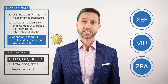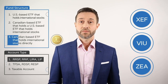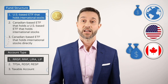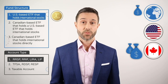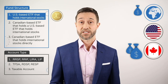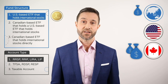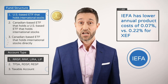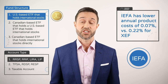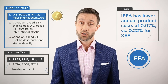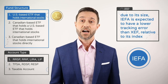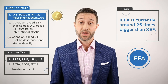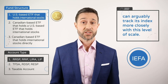Then there's the US-based ETF that holds international stocks. This structure also avoids the additional tax drag when held in an RRSP or RIF, where it's exempt from the 15% US withholding tax. An example is the iShares Core MSCI EAFE ETF with ticker symbol IEFA, which offers two additional benefits: lower product fees at 0.07% annually compared to XEF's 0.22%, and a lower expected tracking error relative to its index. IEFA is currently around 25 times bigger than XEF and can arguably track its index more closely at that scale.